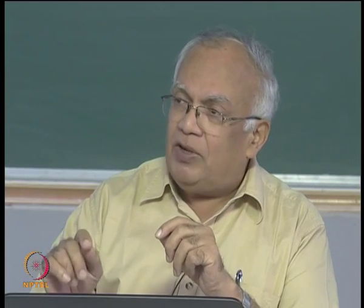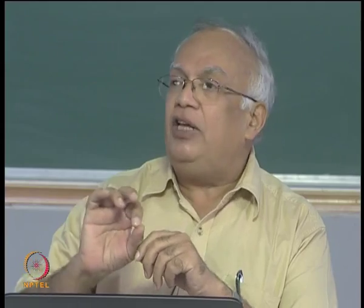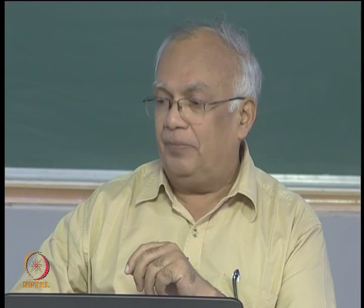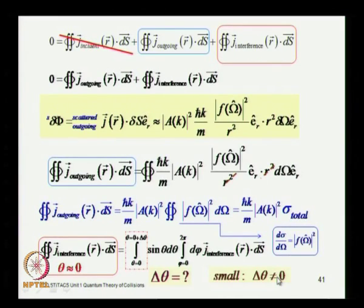It is not important to specify how many degrees or radians δθ is; what matters is that it is a tiny angle corresponding to scattering in the forward direction. It is a tiny angle, but it is not 0. δθ is a small angle which is not equal to 0 — just a qualitative analysis; actual numbers are not relevant for our discussion.